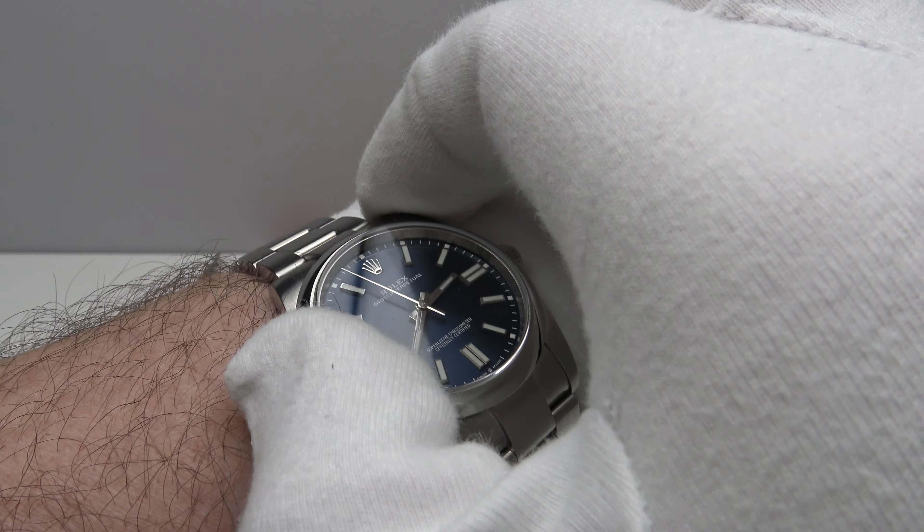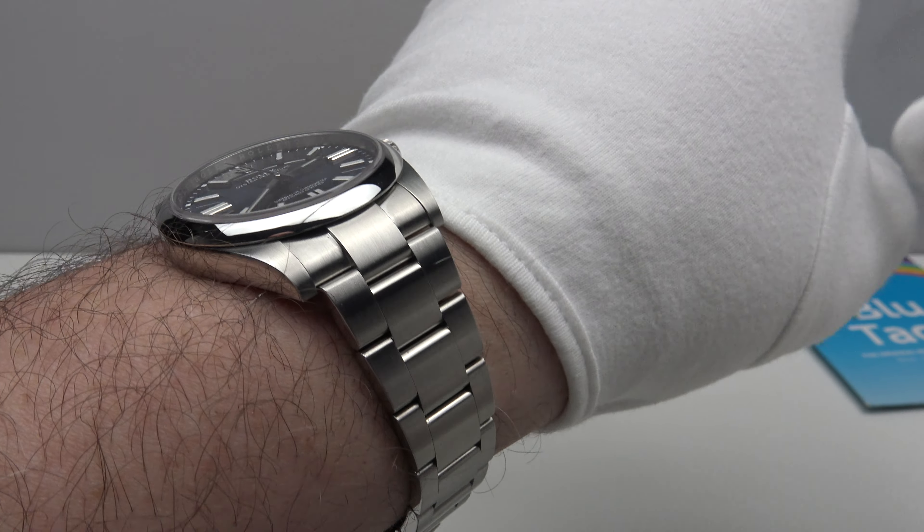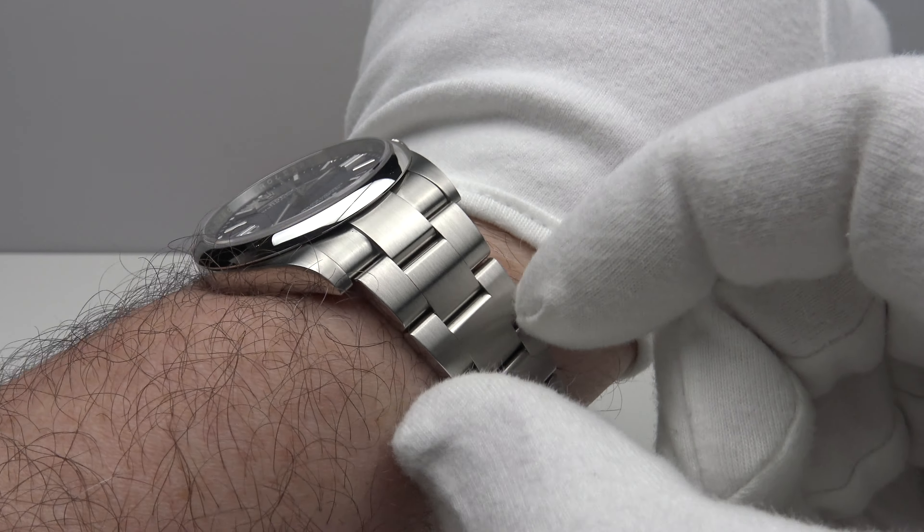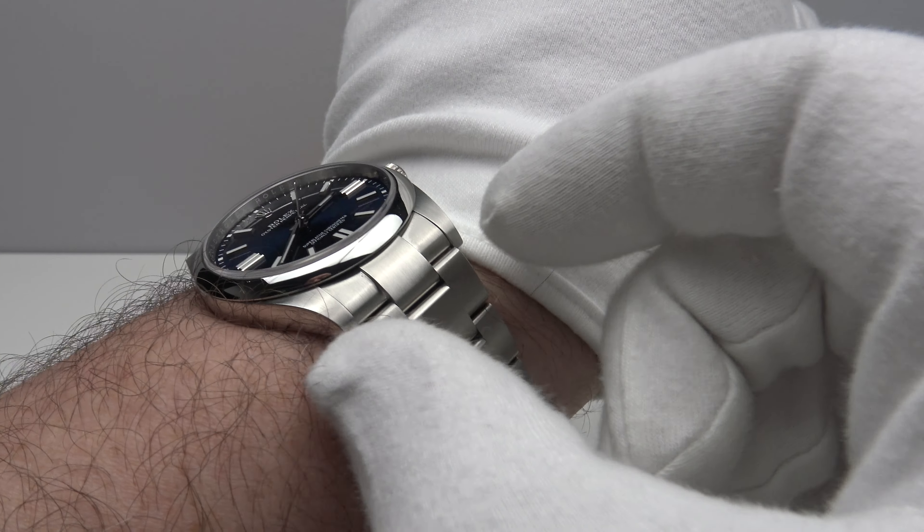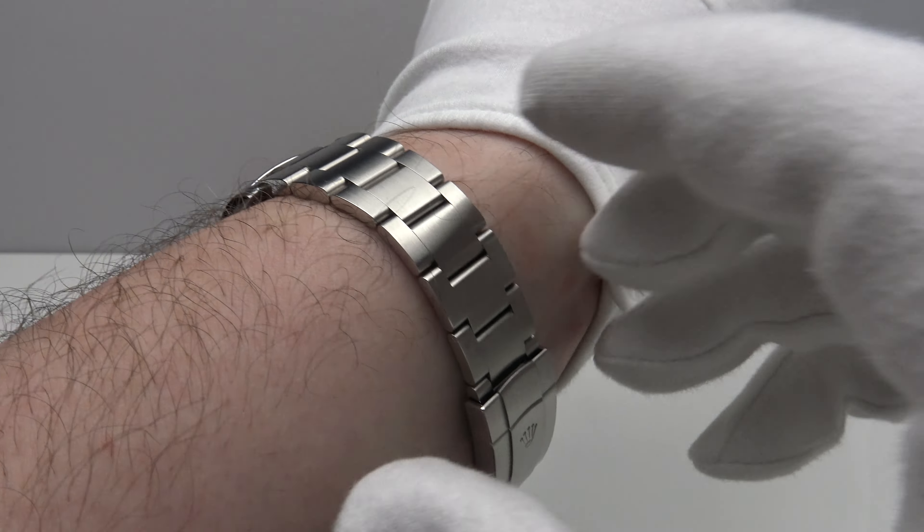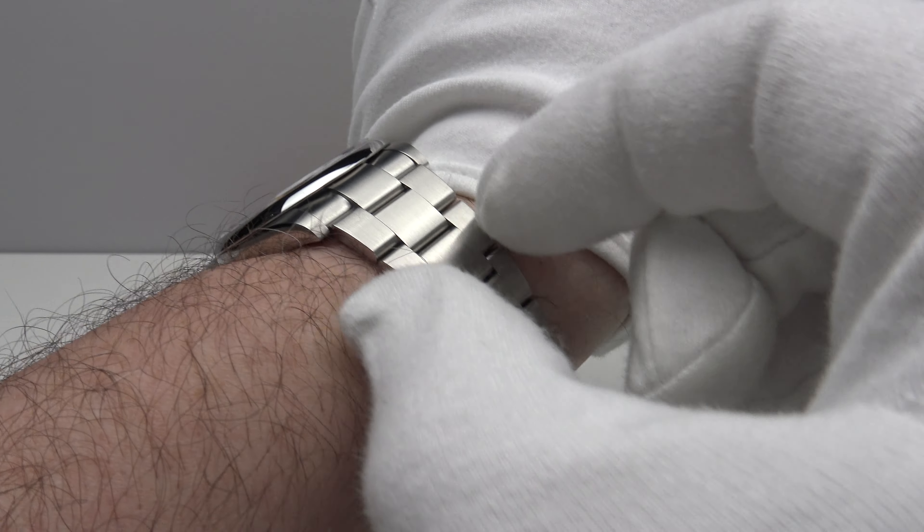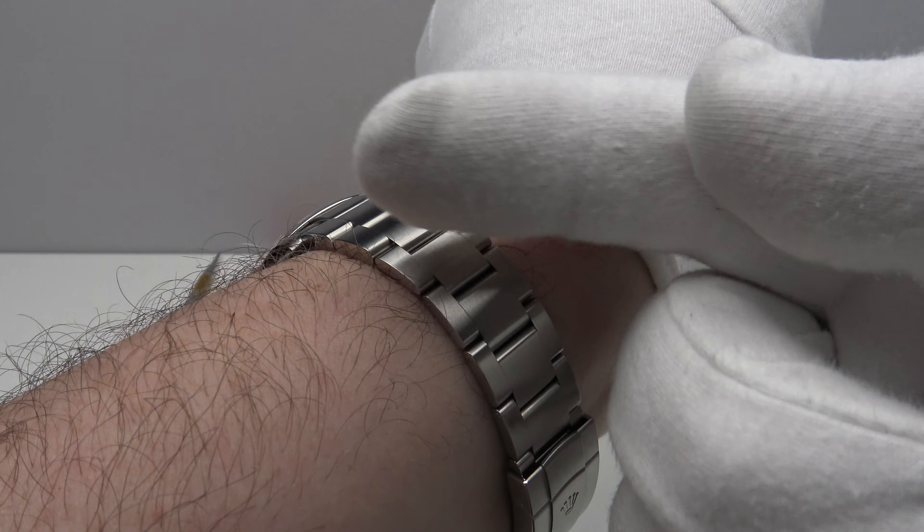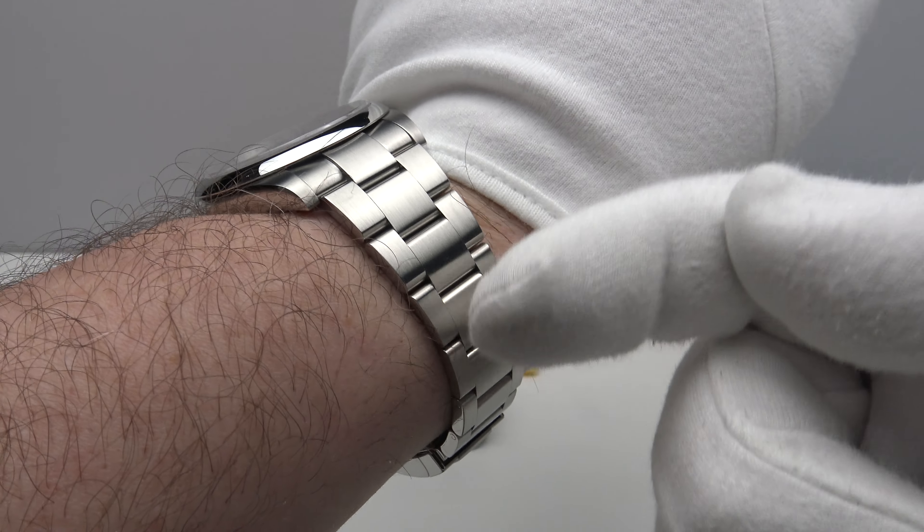One often sees vintage Rolex pieces both with jubilee and oyster bracelets with stretch in the bracelet. And often the reason for stretch is simply that the collector that owned the piece sized it too tight. And when their wrist expand, what it did was it put the pins into shear and therefore that expedited the wear of the pins and therefore it became stretched. It became a sloppy slack fit.